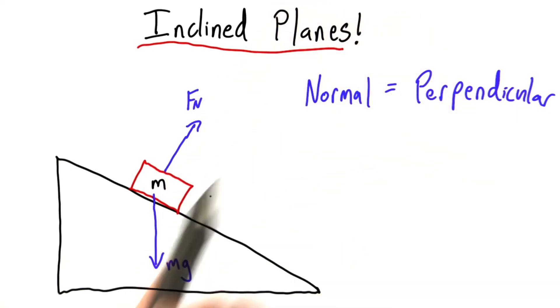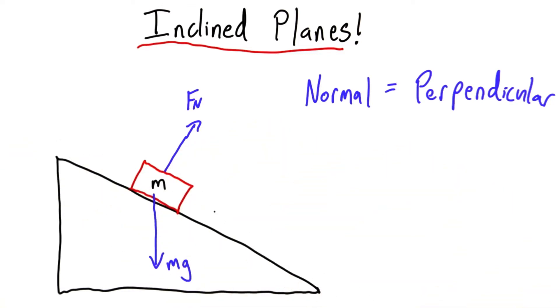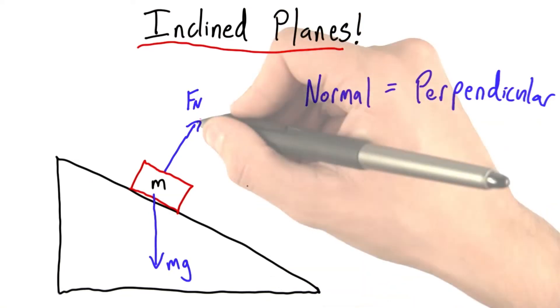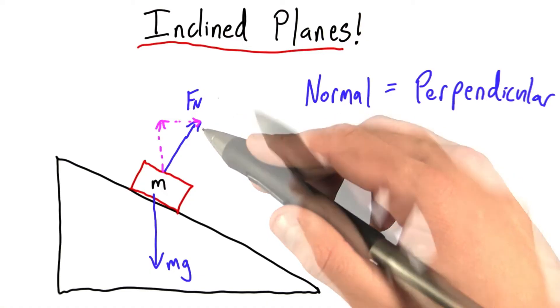And that's because it has to be perpendicular. We're not allowing for any friction. Friction would point up or down the inclined plane. We're only allowing for this normal force. Well, up to now, what we would have done was take this force and break it into vertical and horizontal components.